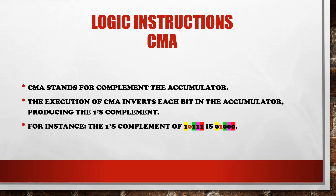For instance, the one's complement of 10111 is 01000. CMA inverts one into zero and zero into one. You can see the distinction column tells the whole story. This is all about the CMA logical instruction of SAP 2.